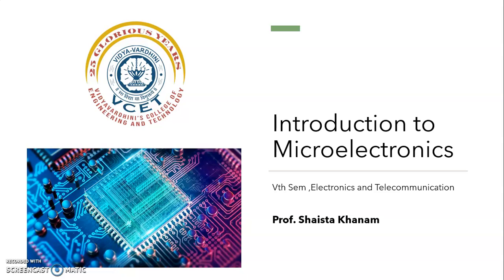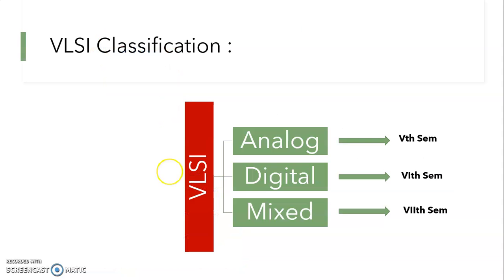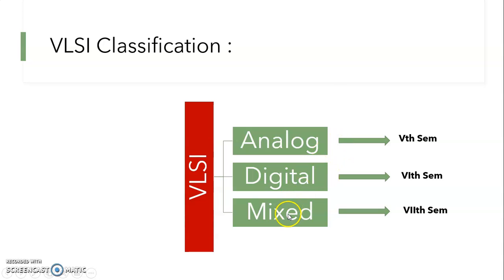Microelectronics is a part of VLSI. VLSI is classified into Analog VLSI, Digital VLSI, and Mixed VLSI. Analog VLSI is a study of analog amplifiers like power amplifiers and oscillators. Digital VLSI covers memory and flip-flops, which you will be studying in the 6th semester. Mixed VLSI is a combination of analog and digital — for example, mobile phones — which you will study in your 7th semester.